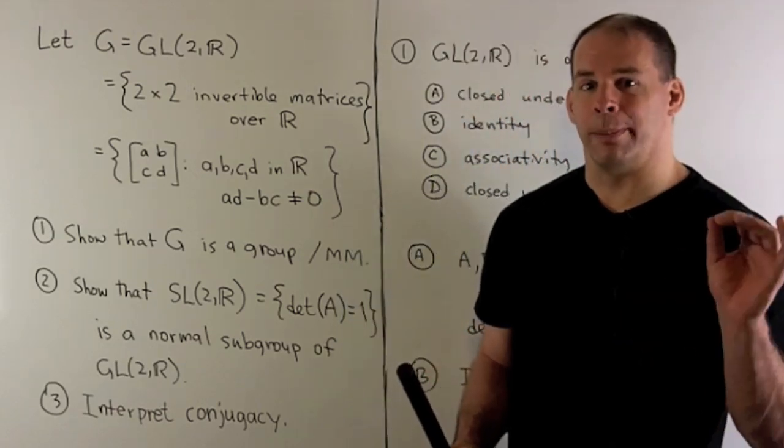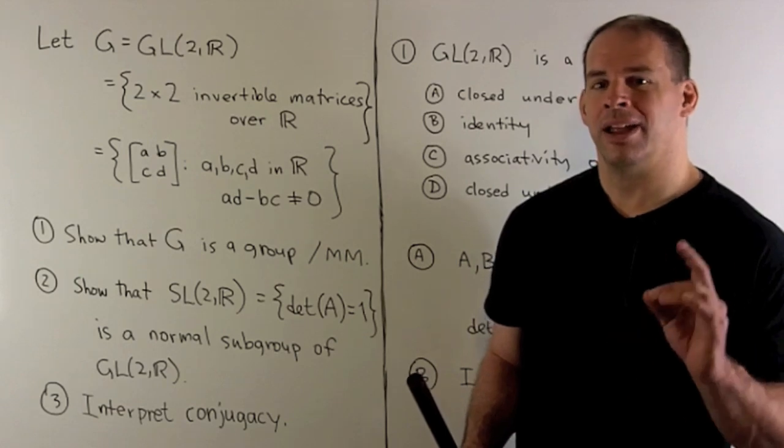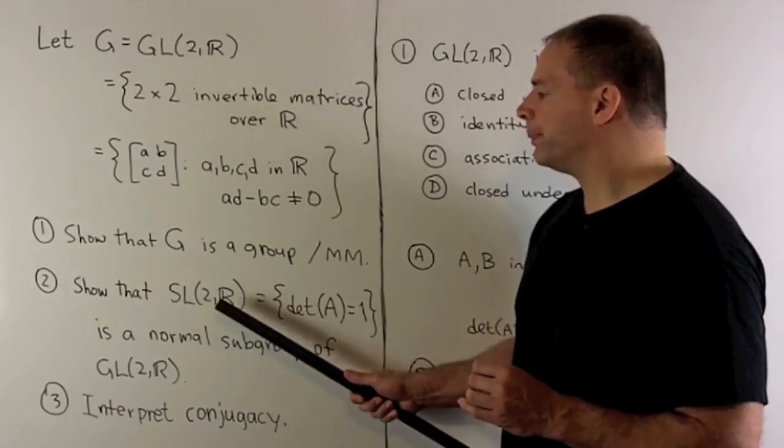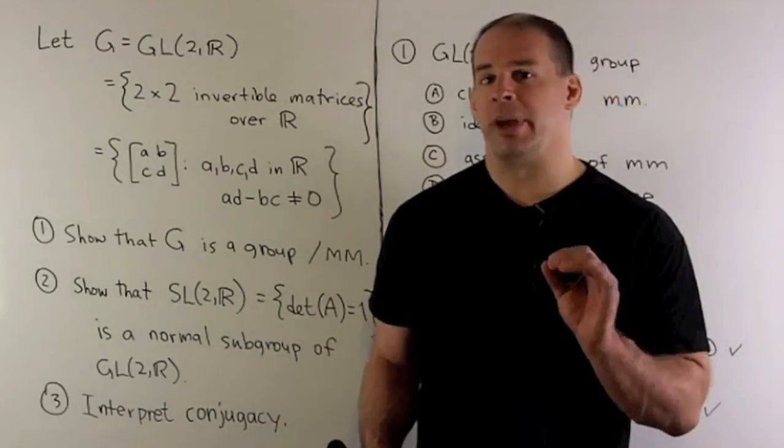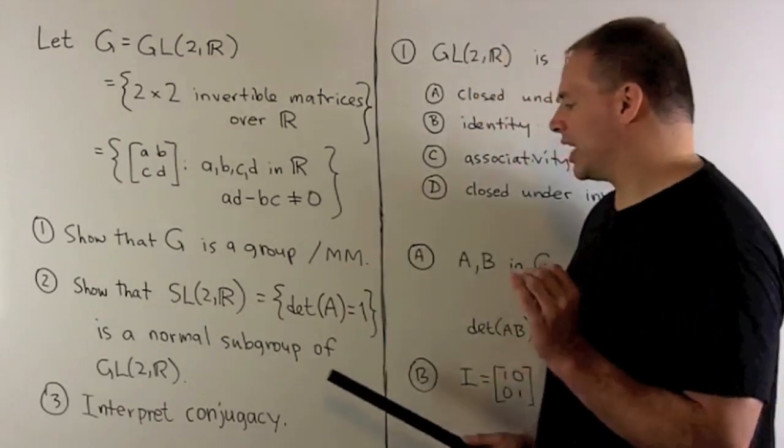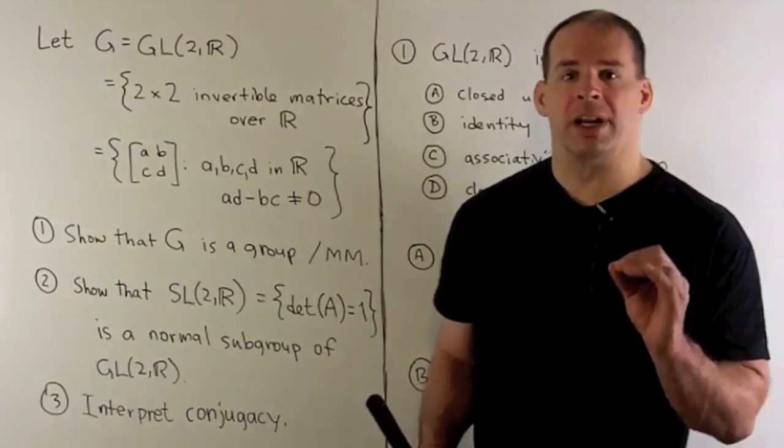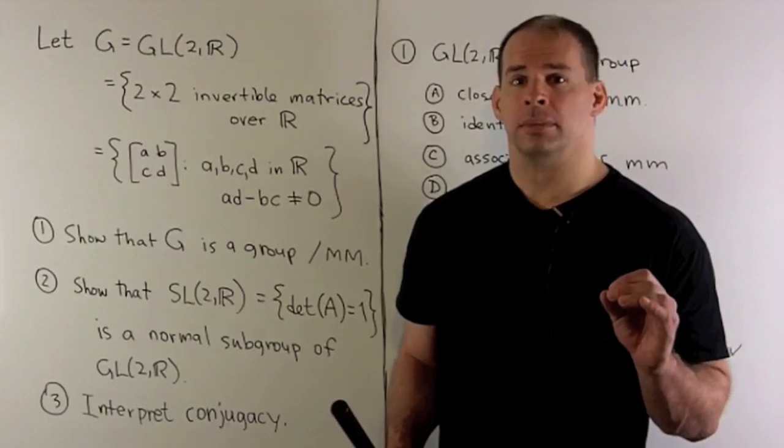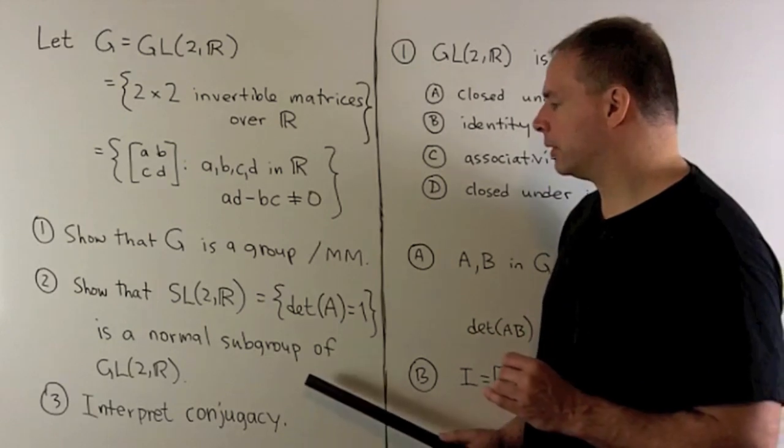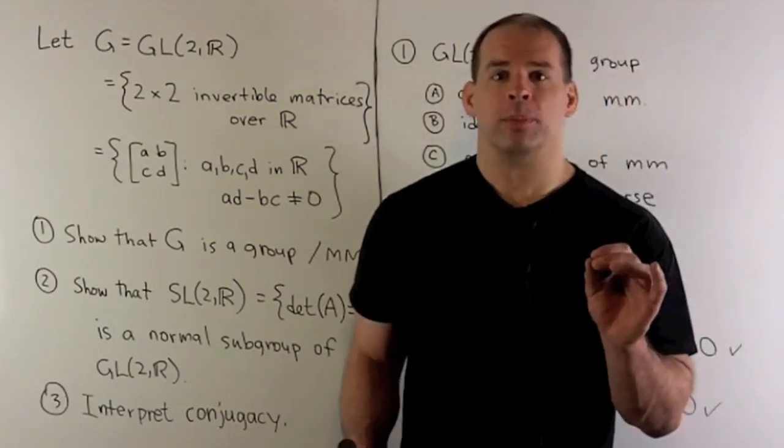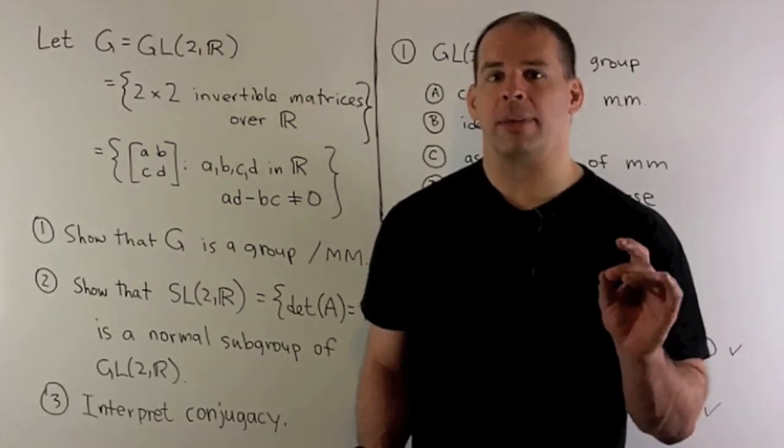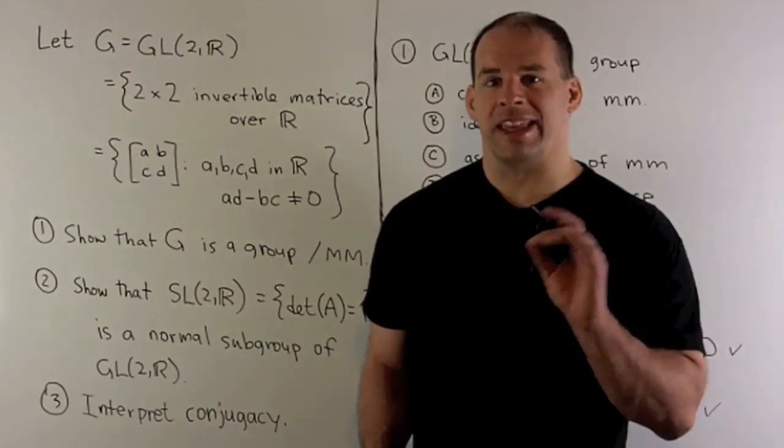We want to show three things. First we'll show that G is a group under matrix multiplication. Then we'll have the subset SL(2,R), the special linear group—two by two matrices with real entries defined as just the set of matrices whose determinant is equal to one. I want to show that that's a normal subgroup of G. Then we have a notion of conjugation of matrices, a notion of conjugation of group elements—we just want to show that they line up.